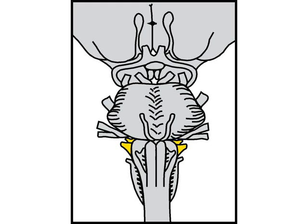Cranial nerves 9 and 10. These two nerves are clinically lumped together. Motor-wise, they innervate pharyngeal and laryngeal muscles. Their sensory component is sensation for the pharynx and taste for the posterior one-third of the tongue.